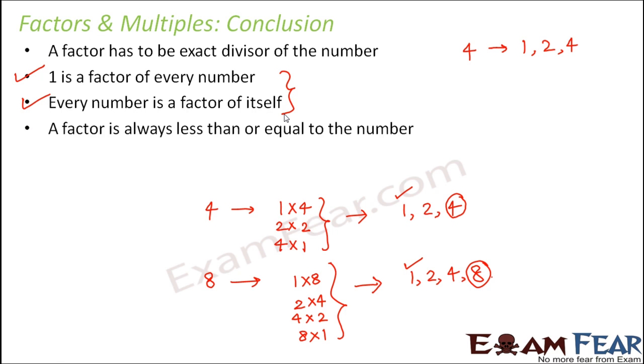A factor is always less than or equal to the number. So that is very much evident because who would be a factor? An exact divisor. So that exact divisor has to be less than the number itself or at the max it can be equal to the number. So you see for 4, the factors are either less than 4 like 1 and 2 or equal to 4. Similarly for 8, the factors are either less than 8 like 1, 2, and 4 or it is equal to 8.